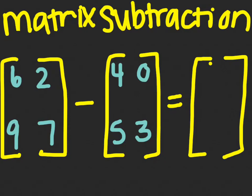So 6 minus 4 is 2. 2 minus 0 is 2. 9 minus 5 is 4. And 7 minus 3 is also 4.